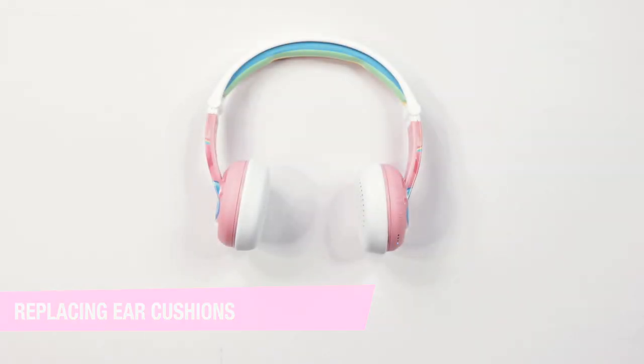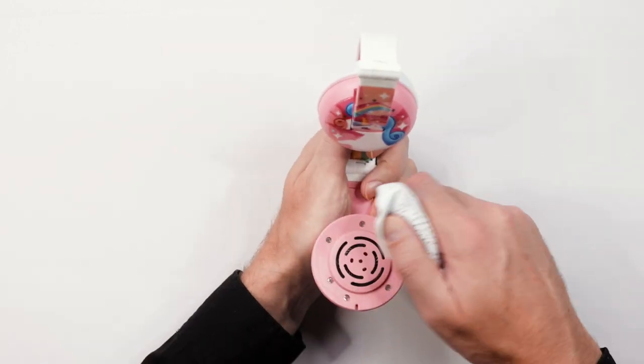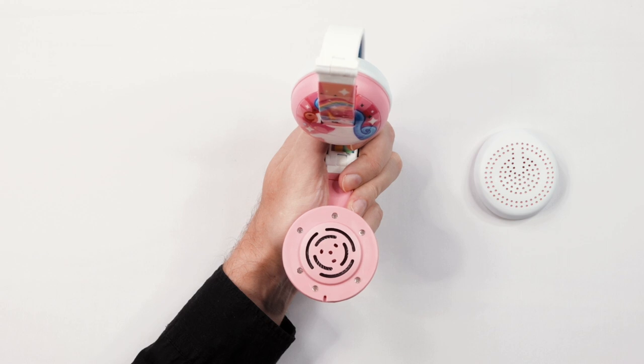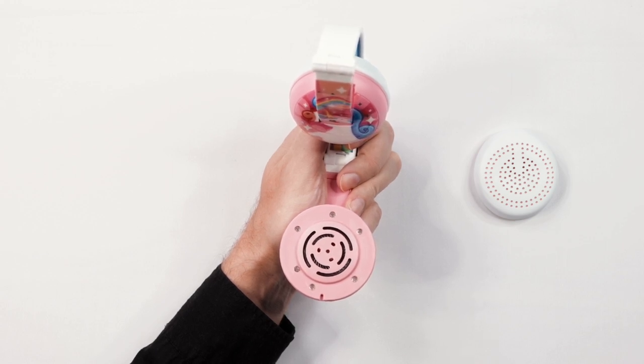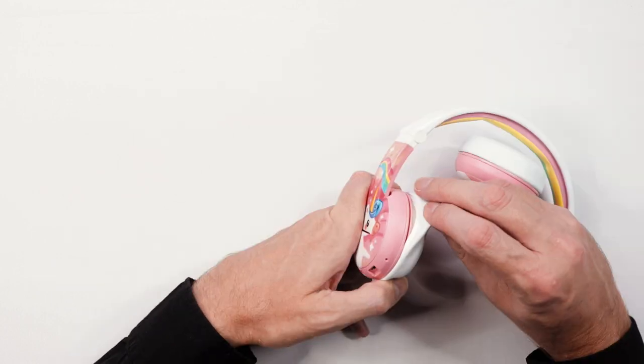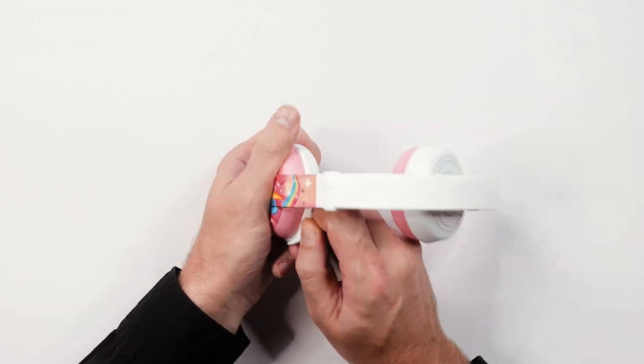Replacing ear cushions. If for any reason you need to replace the ear cushions, they can be easily removed by pinching the edges and gently pulling in an upward direction. To replace the earphone cushions, first slide part of the elastic edge into the groove of the ear cup. Then slowly work your way around until all the elastic is inserted.